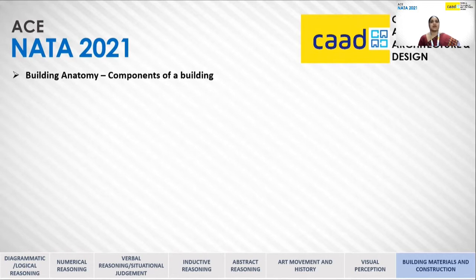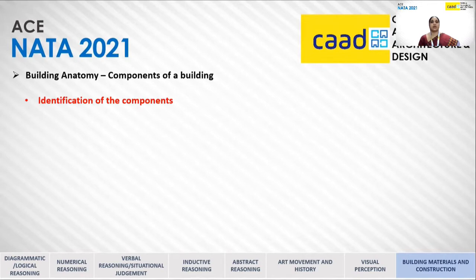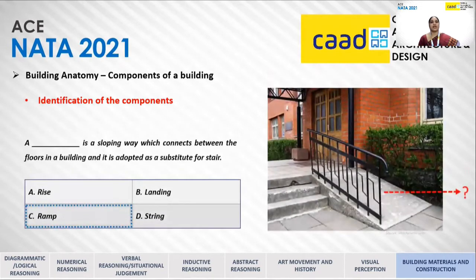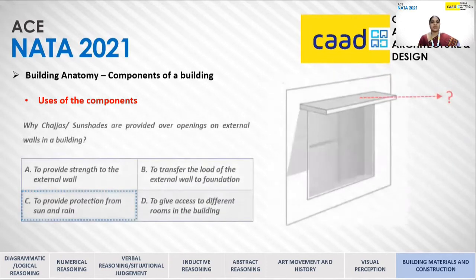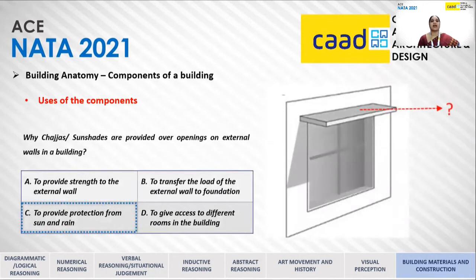Components means the parts of the building such as foundations, doors, windows, roof, etc. The first type of question involves identification of components — an image, definition, or uses of a particular element will be given and you have to select the correct answer. Then there are questions on the uses of components — the purpose of components in a building. For example, why are chajas or sunshades provided over openings on an external wall? The answer is to provide protection from sun and rain.